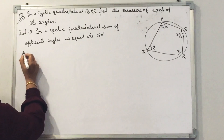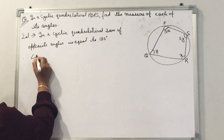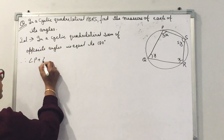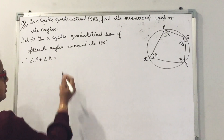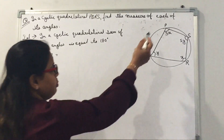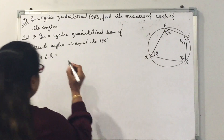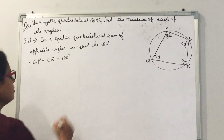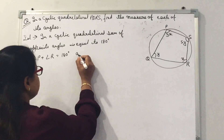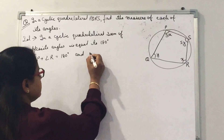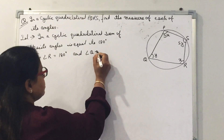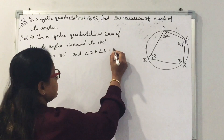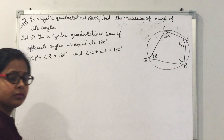Therefore, angle P plus angle R is equal to 180 degrees, and angle Q plus angle S is equal to 180 degrees.